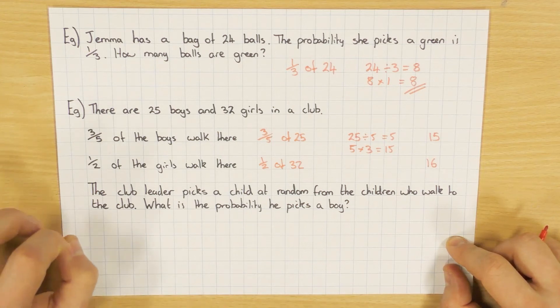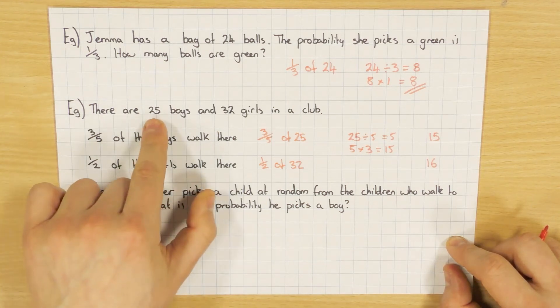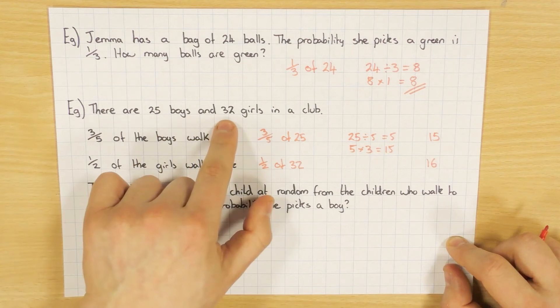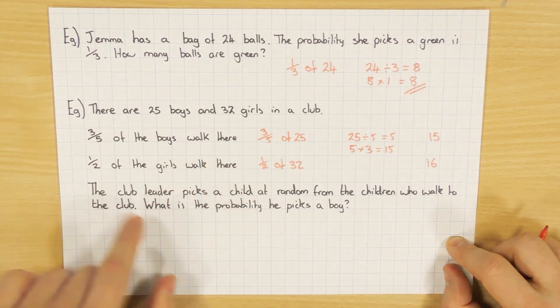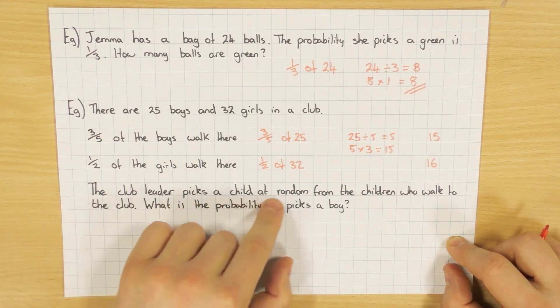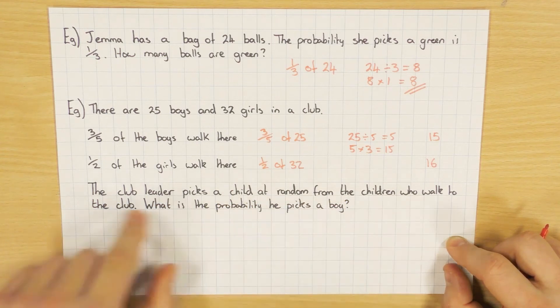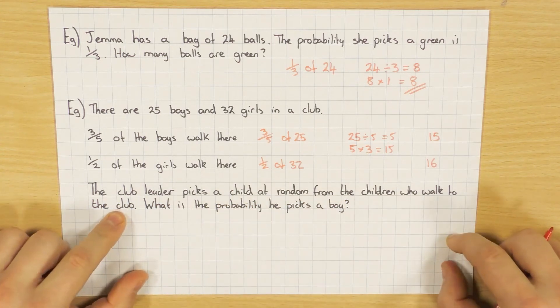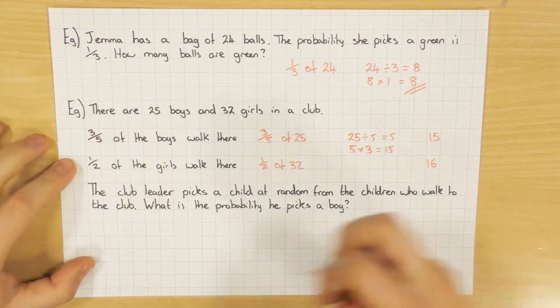Now, this is the key bit where people are going to make mistakes. What some people do is they'll get the total of the boys and the girls, and then that's what they'll have as a denominator. But read the question carefully. It says the club leader picks a child at random from the children who walk to the club. So that's what you need to do. Have a look at the children that walk to the club.